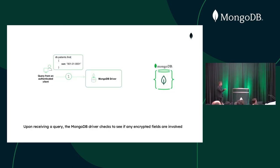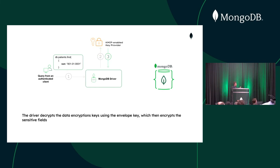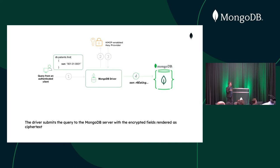Let's look at how client-side field-level encryption works. A user executes a query to find a social security number. The client connects to the MongoDB driver, which looks up the KMIP-enabled envelope key. The envelope key is the key used to encrypt the data key, and the data key is then used to encrypt the actual field — in this case, the social security number.